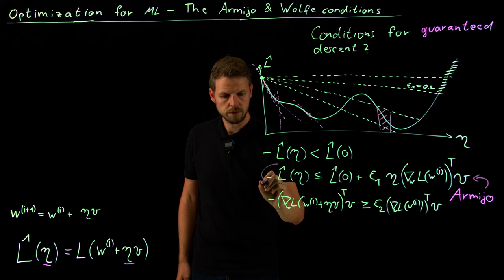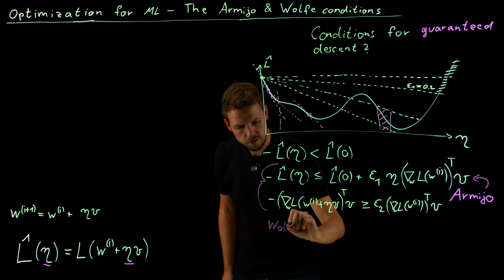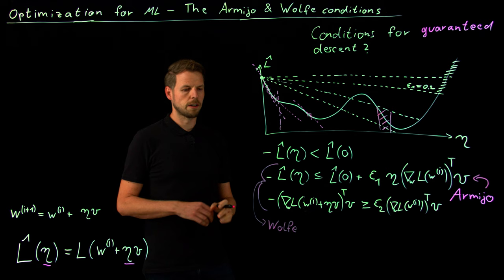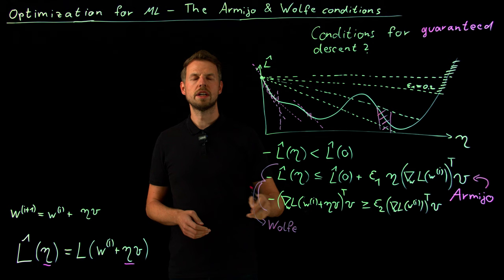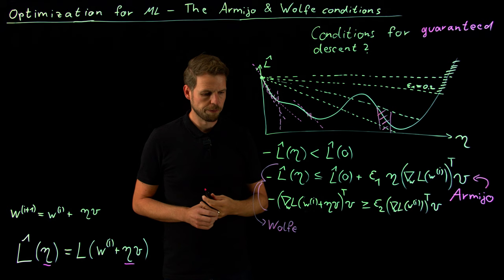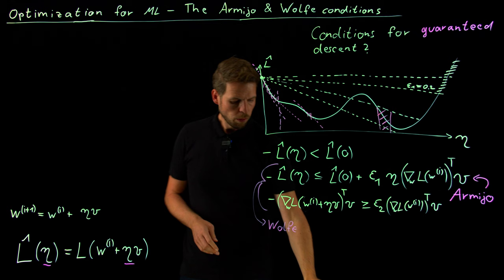Not to confuse, this first one is known as the Armijo rule and these two together are known as the Wolfe conditions. For those who are interested in the theory behind optimization, the Wolfe conditions are actually sufficient in many algorithms to prove that this direction will give you an optimum after a finite number of iterations to a given precision. This is really powerful.